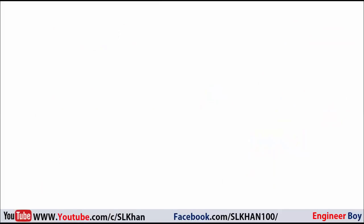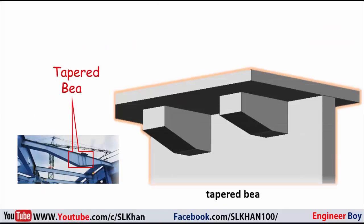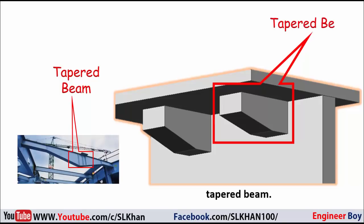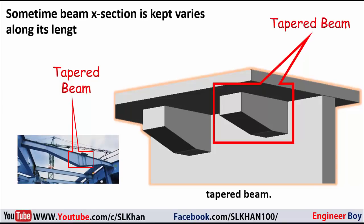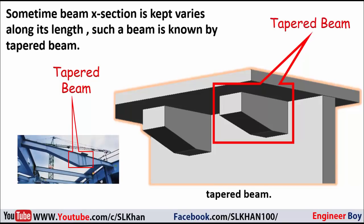Sometimes the beam cross-section is kept varying along its length. Such a beam is known as a tapered beam. So that covers beams and their types.